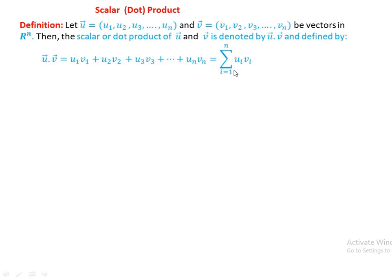This equals the summation of ui times vi, where i runs from 1 to n. This equals the scalar or dot product. The result is called a scalar value, not a vector.